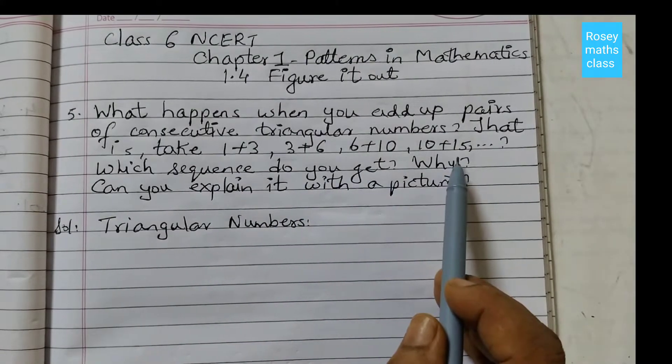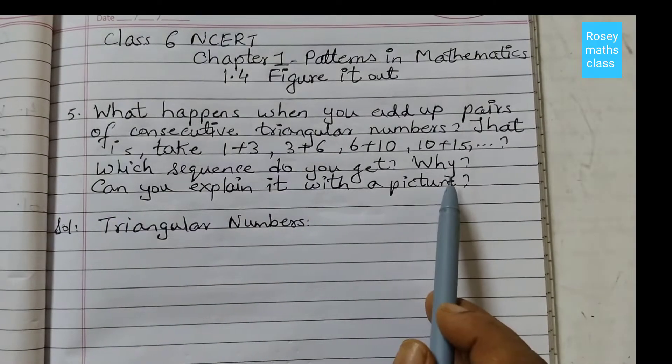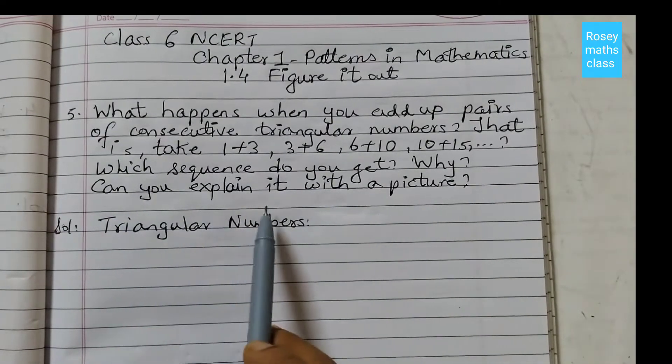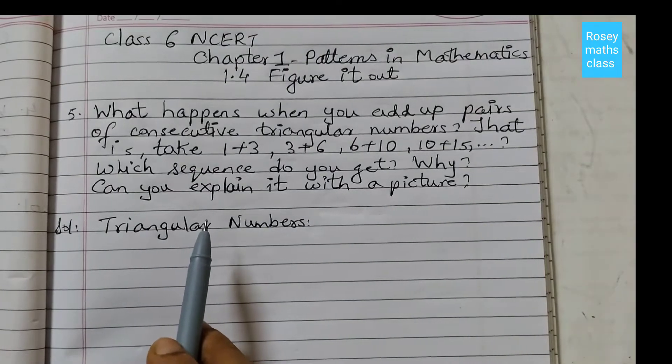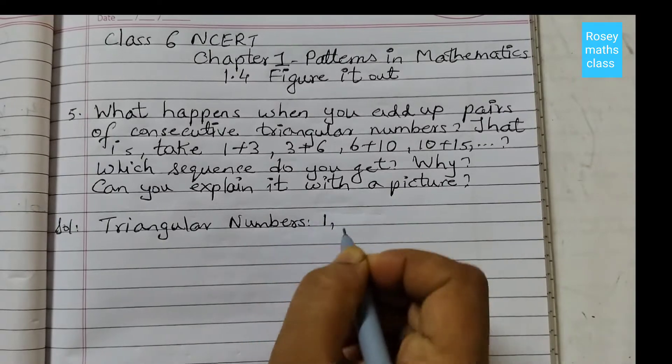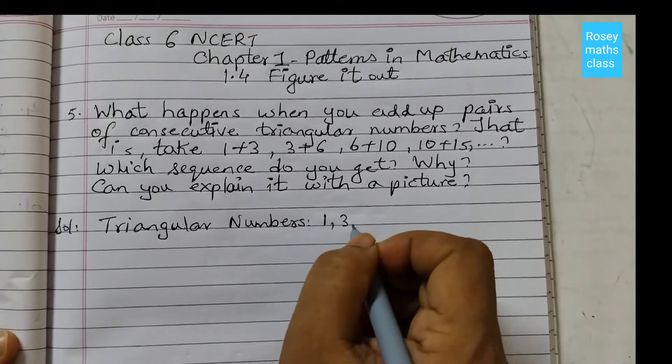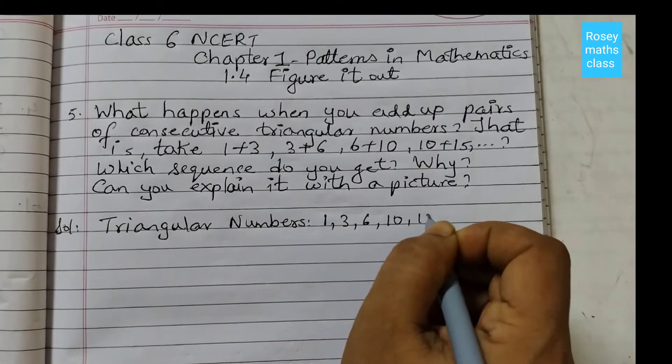6+10, 10+15, and so on. Which sequence do you get? Why? Can you explain it with a picture? So here first we should know what are triangular numbers. Triangular numbers are 1, 3, 6, 10, 15,